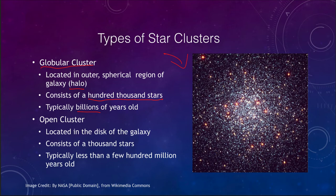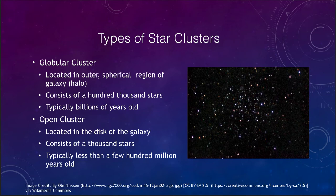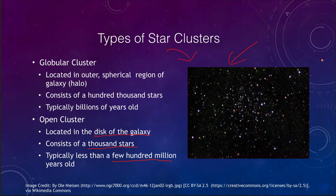There are also much younger clusters called open clusters. An open cluster, by comparison, is located in the disk — the flattened portion of our galaxy. They may only contain several thousands of stars and are typically less than a few hundred million years old. Open clusters are much more spread out than globular clusters, with fewer stars, many of which are younger. An open cluster will eventually dissipate out into space, whereas a globular cluster has enough material to remain gravitationally bound for billions of years.